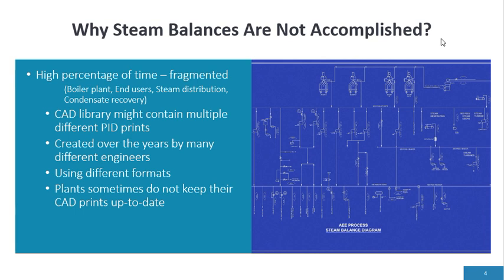The library may contain multiple CAD prints. It's not uncommon for us to go through 70 CAD prints before we finally come up with this steam balance diagram. It takes time and effort. The other thing is it's created over the years by many different engineers using different formats: AutoCAD, SolidWorks, P and ID. And then the plants do not keep their CAD prints up to date. So we have to field verify and make sure the prints are up to date. It becomes a very tedious task to do, but the payback is tremendous.